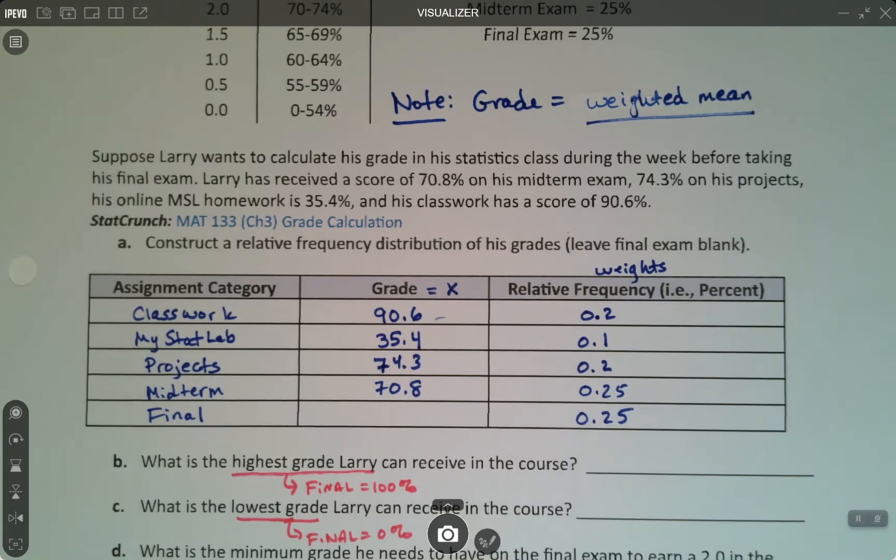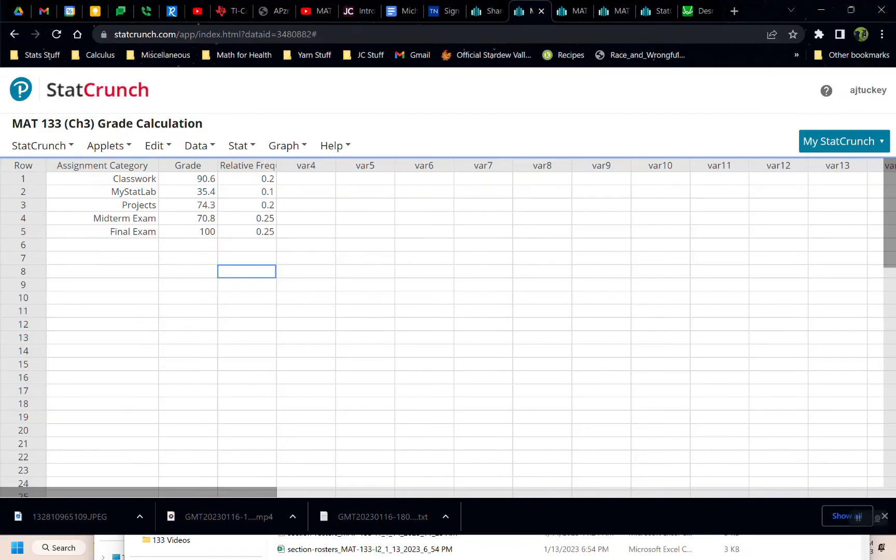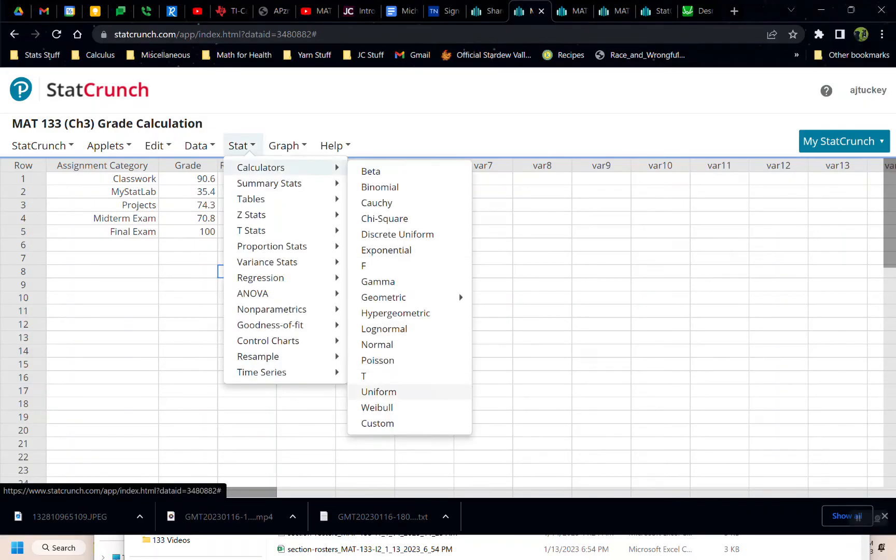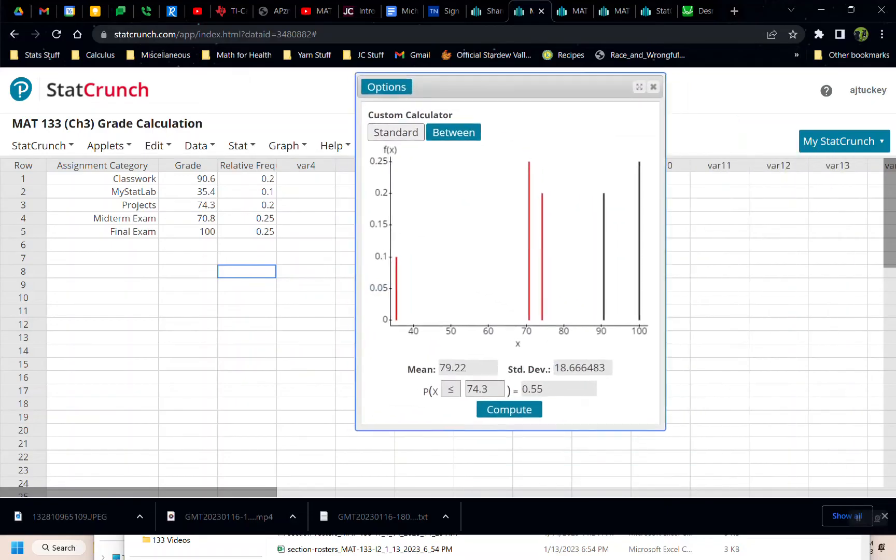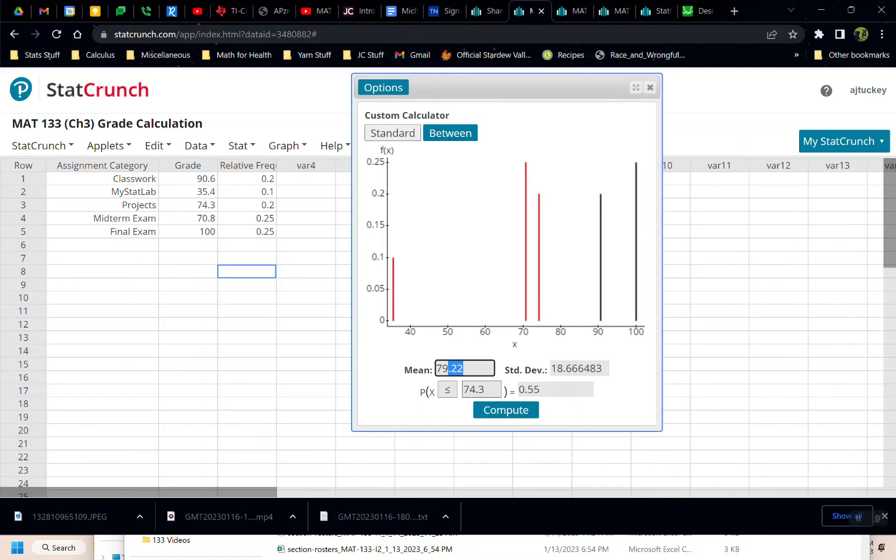So let me go back to StatCrunch. I'm going to go to stat, calculators, custom. My values are my grades. My weights are rather obviously my relative frequency. And then I click compute. That gives you this big picture, which you don't really need. But what you do need is the mean. The mean right there is 79.22.